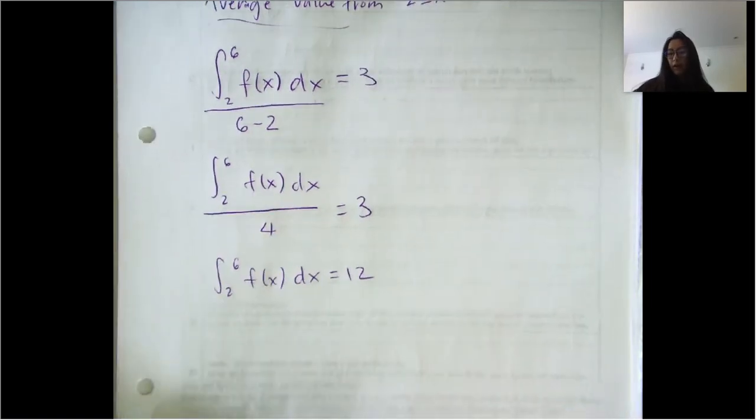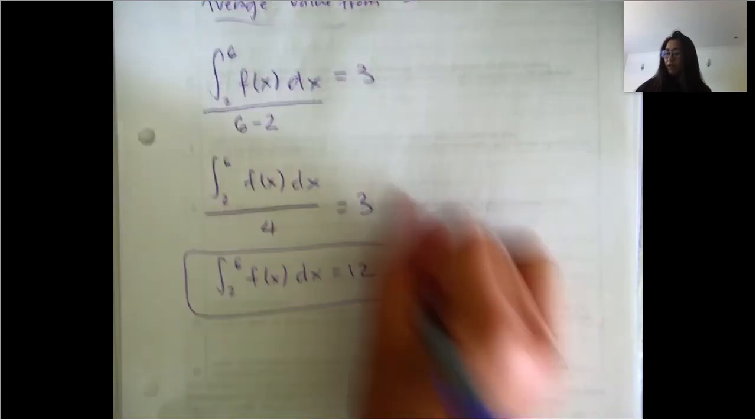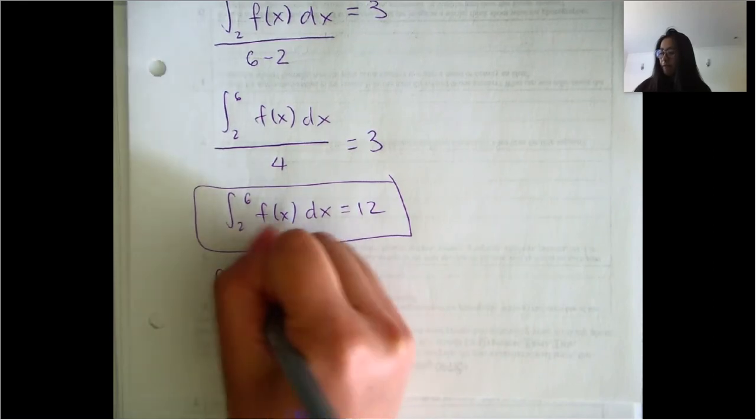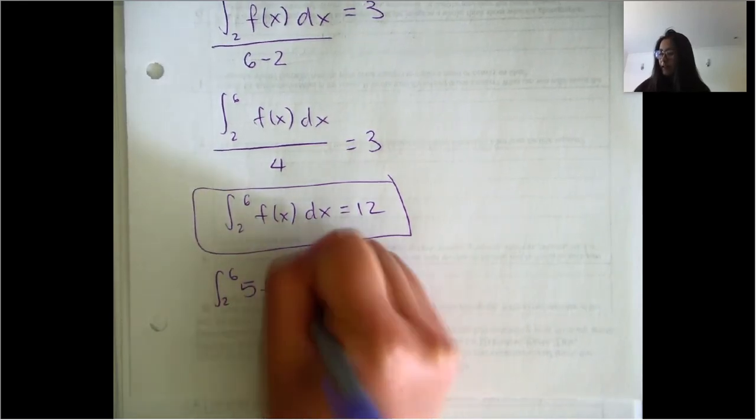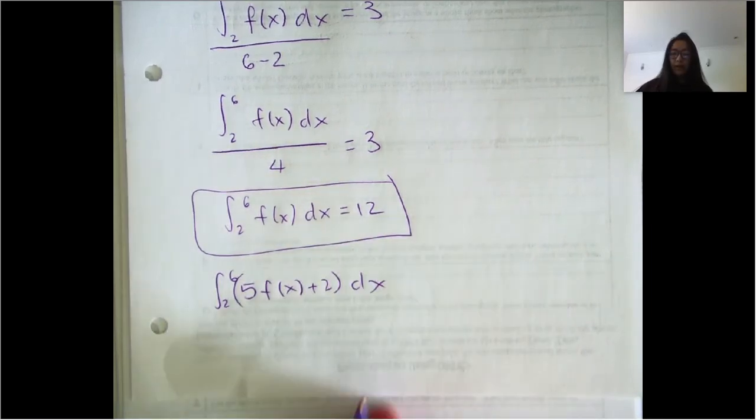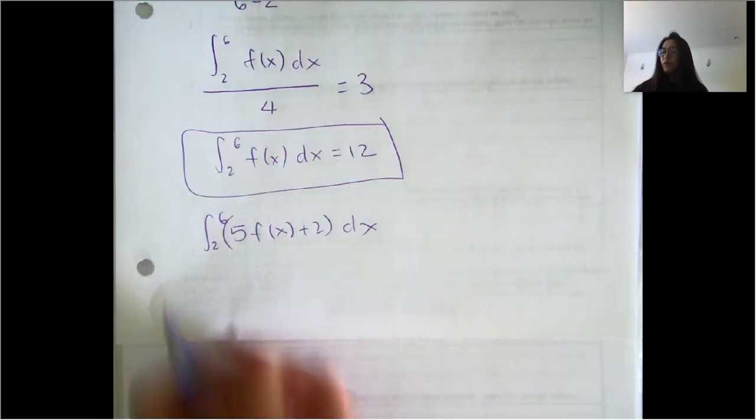And so reading the question, it's asking you to evaluate the value of the integral from two to six of five times F of X plus two DX. And so based on the properties of integrals, you can actually split this up and then fill in where that 12 is.